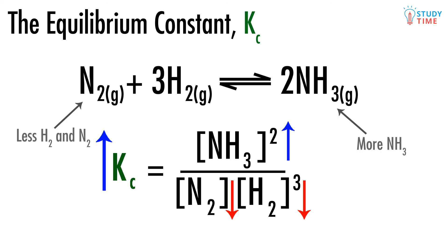K sub C began at 1, so even though we don't know by how much the concentrations of the chemicals changed, we can say with absolute certainty that the new K sub C we end up with will be more than 1.